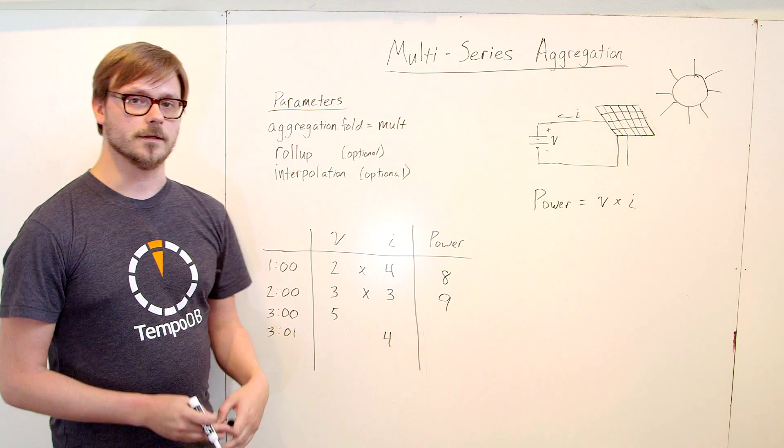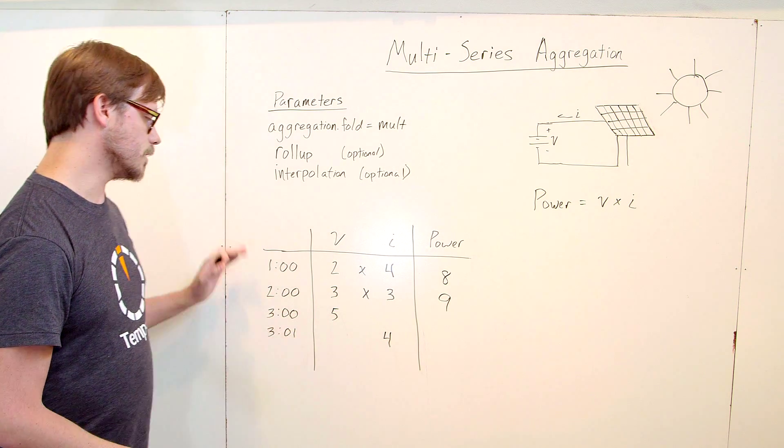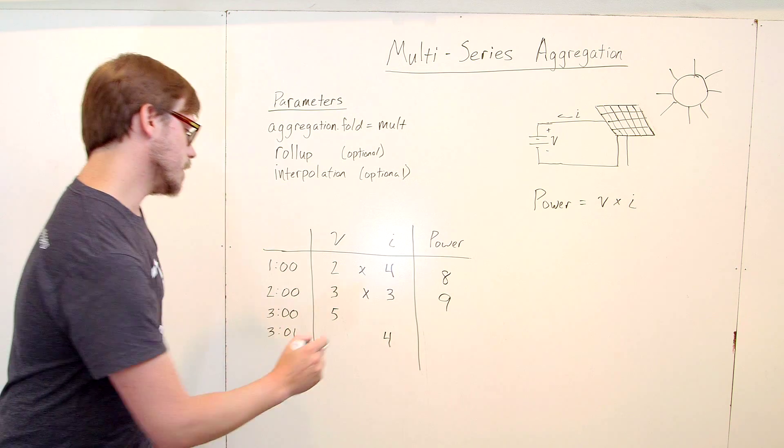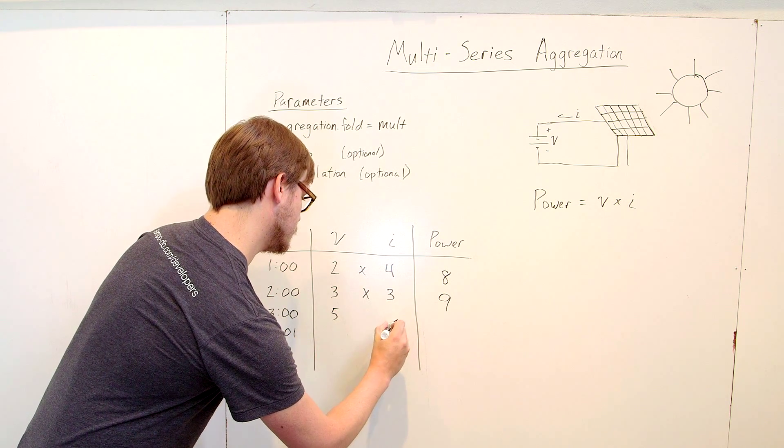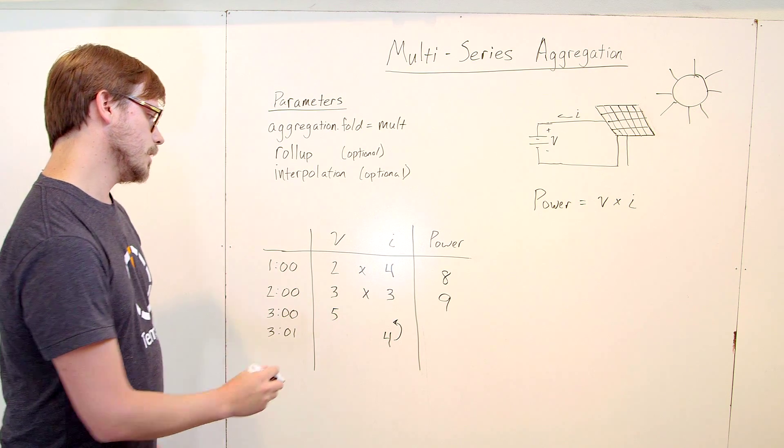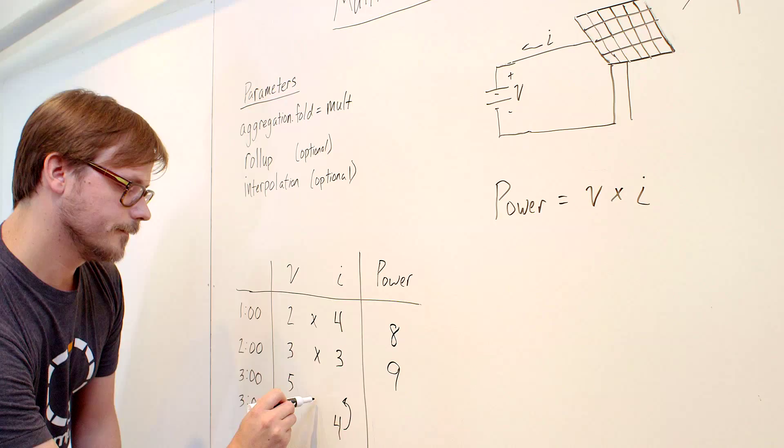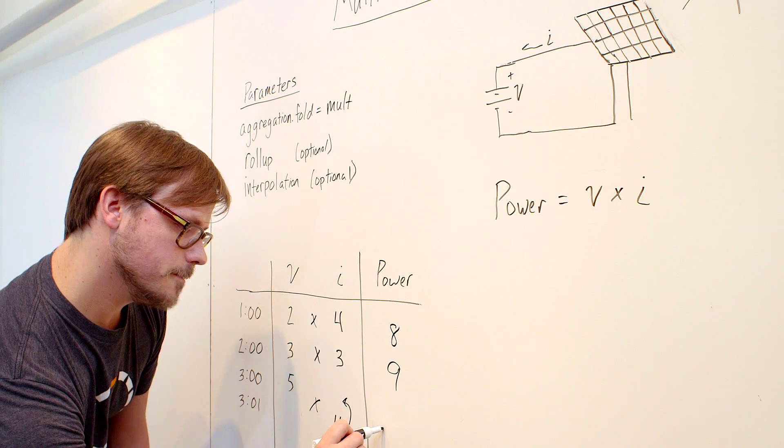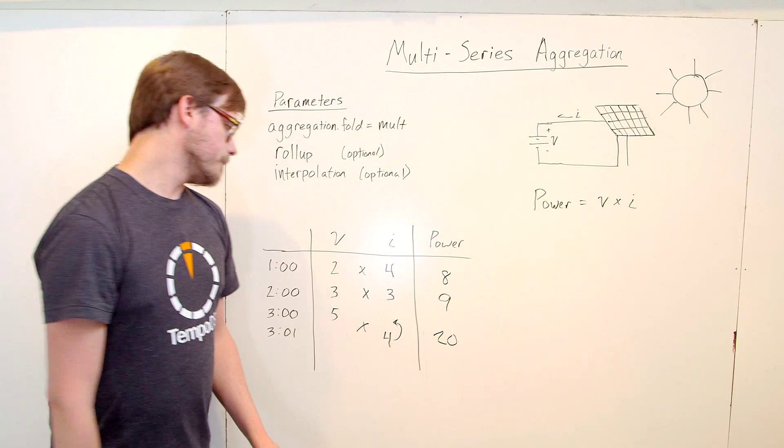But you can actually fix this problem using interpolation. So if you ran an interpolation on these two series, you could actually move the four up to the three o'clock position, and then multiply them. So you can get the answer, which would be 20, and so on.